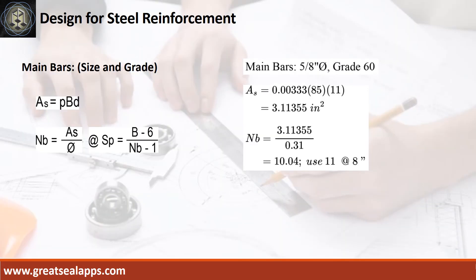Given ρ equals 0.00333, B equals 85 inches, and D equals 11 inches. The area of steel for main bars is 3.11355 square inches and the number of bars for 5/8 inch diameter is 11.